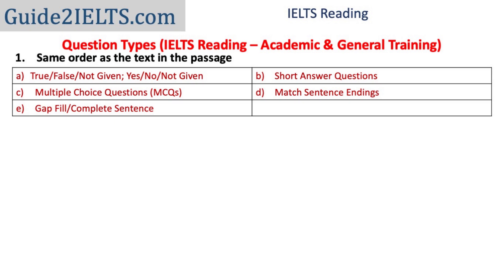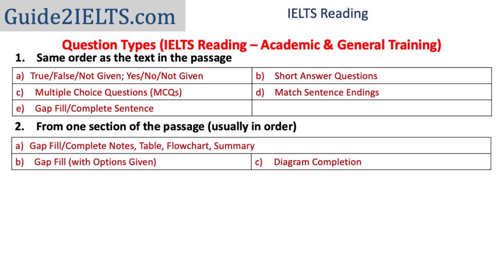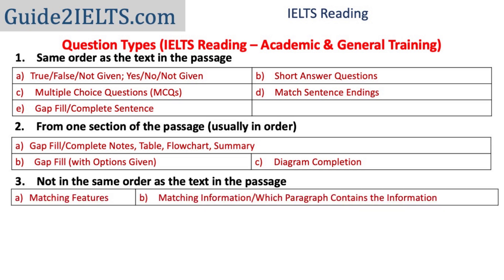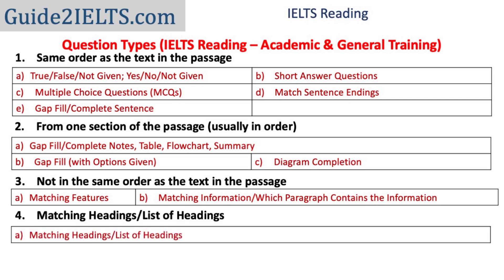The first group: questions that follow the same order as the information in the text. The second group: questions that may not follow the same order, but their answers are from one section of the passage, so the answers are close by. Third, some questions that do not follow the text's order. And the last category has one question type, matching headings or list of headings. For each question type, we'll first discuss what needs to be done, then some practical tips and strategies, and finally some examples to understand how to practically solve them.